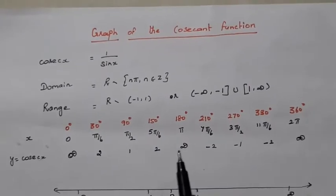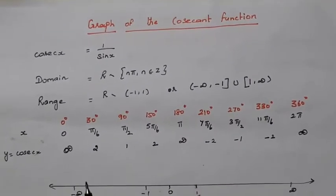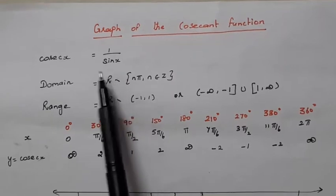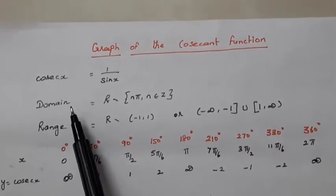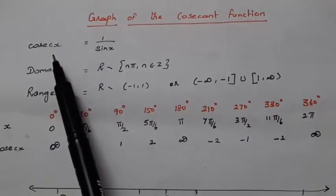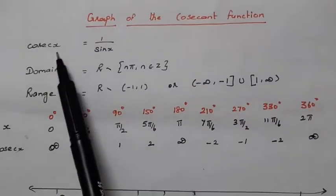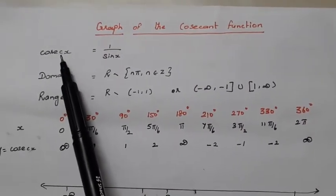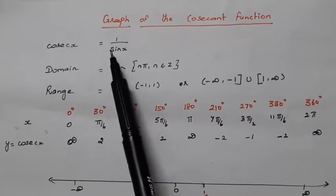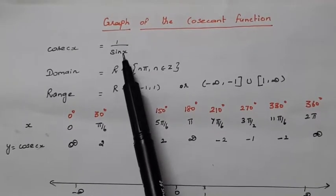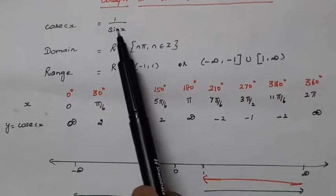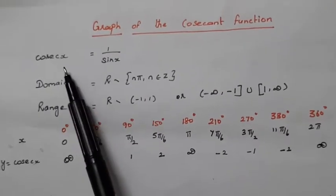To start with, let us see how to draw the graph of the cosecant function. You know that cosecant x is nothing but the reciprocal of sine x. So what would be the domain of the cosecant function? As it is a reciprocal of sine x, we have to give the value of x in such a way that sine x should not be equal to 0, because cosecant x does not exist when sine x equals 0.